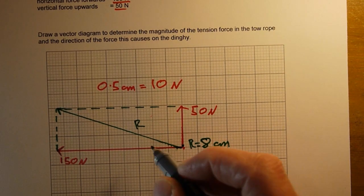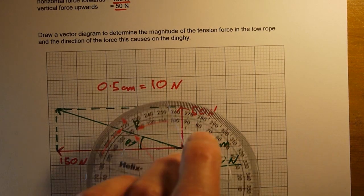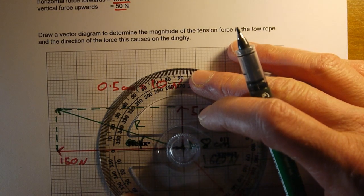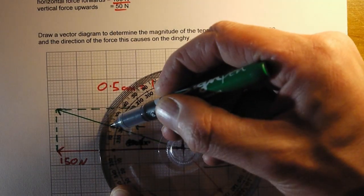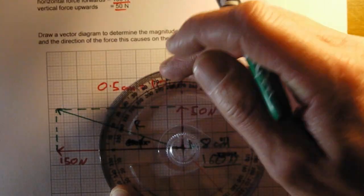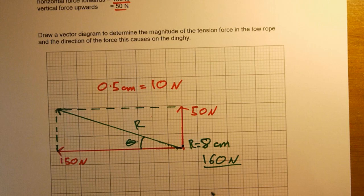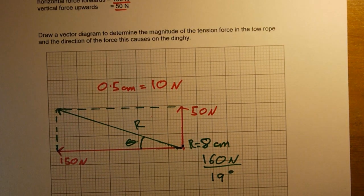We also need to find out the direction of the force, that angle here. To do that we just get out our angle measure and put zero on the horizontal, and we're going to measure that carefully. That gives me an angle of 19 degrees. So the direction of the force is 19 degrees to the horizontal. That is how we use a scale diagram to find out the resultant of two components of a force.